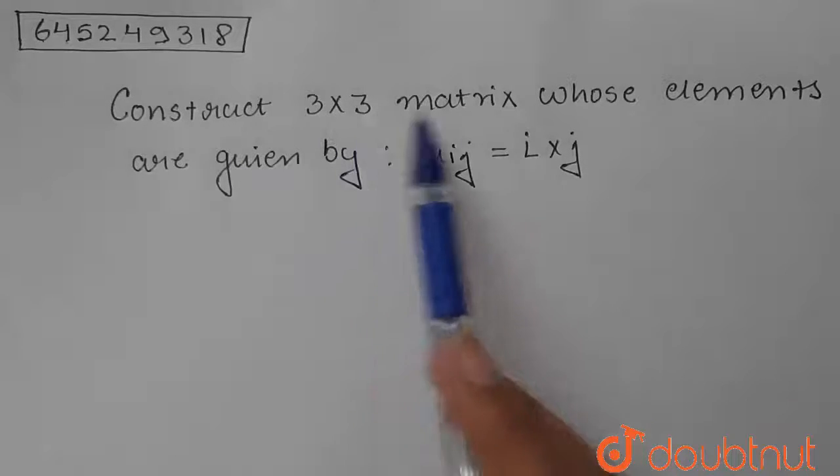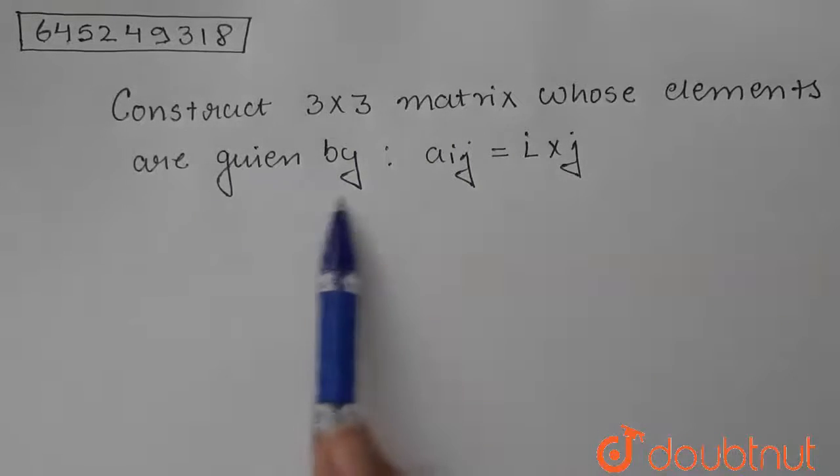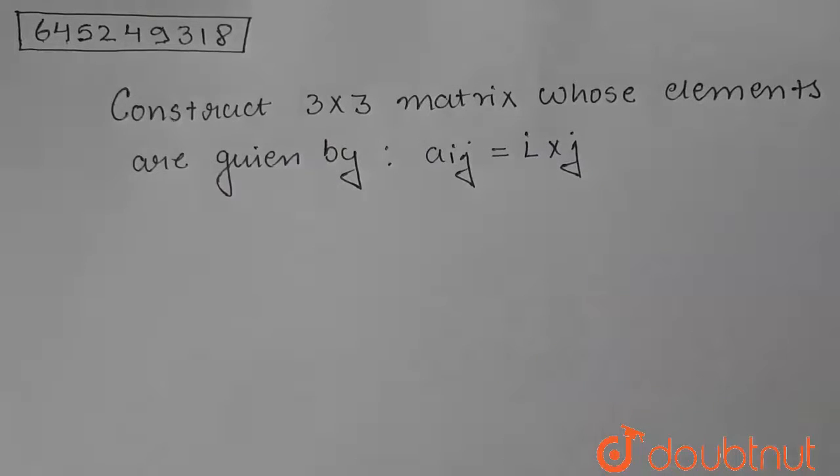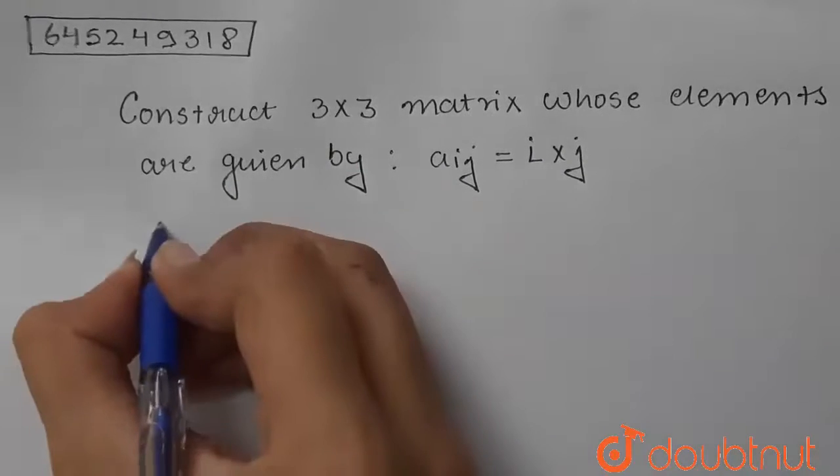Today, the question is: construct a 3x3 matrix whose elements are given by aij equals i times j. So we need to construct a 3x3 matrix.